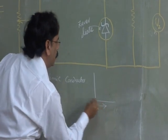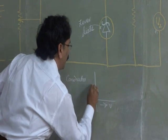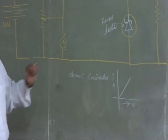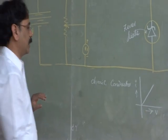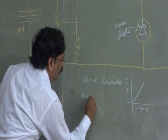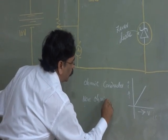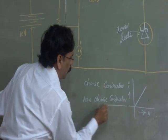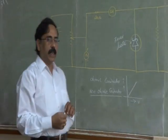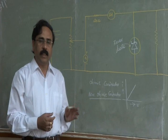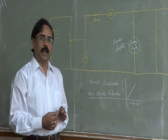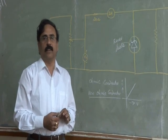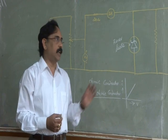If you plot a graph in the case of ohmic conductors — voltage versus current — you obtain a straight line. But there are some conductors which do not obey Ohm's law, and those conductors are called non-ohmic conductors. Examples of non-ohmic conductors include PN junction diodes, all semiconductor devices, transistors, and the Zener diode.